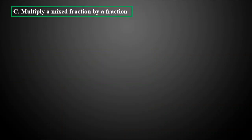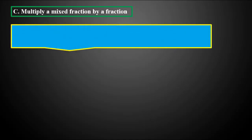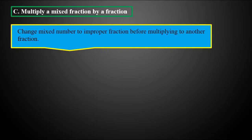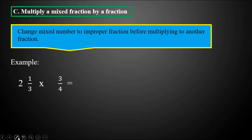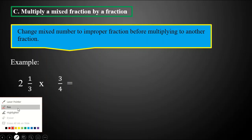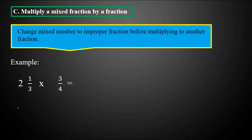Another type is multiplying a mixed fraction by a fraction. If our given is a mixed fraction, we need first to change it to an improper fraction before we multiply. For example, we have two and one-third times three-fourths. Our mixed fraction is two and one-third, and to convert it to an improper fraction, we multiply the denominator three by the whole number two.